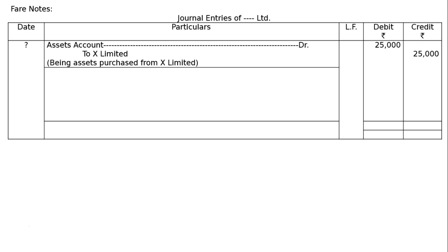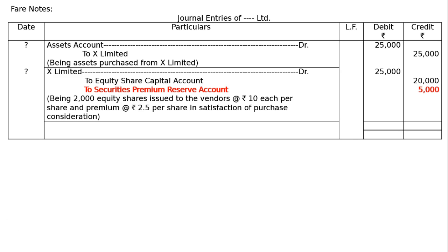Journal entries: Assets Account debited to X Limited rupees 25,000, being assets purchased from X Limited. Assets purchased from X Limited, the value being rupees 25,000.